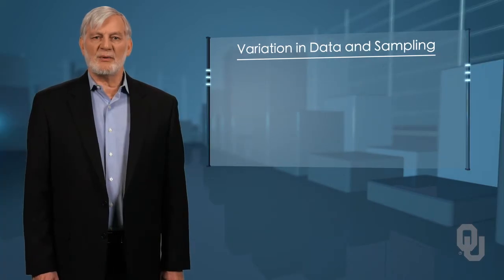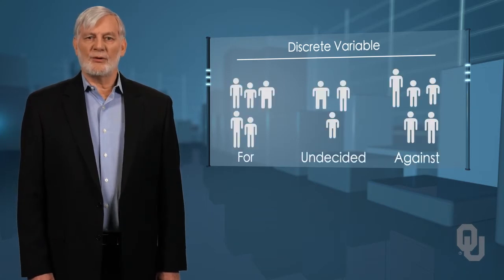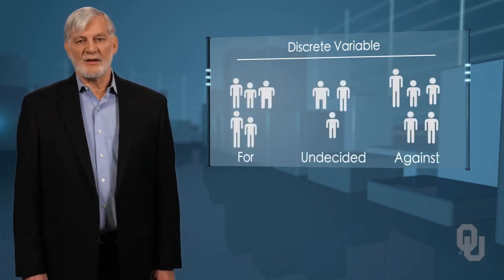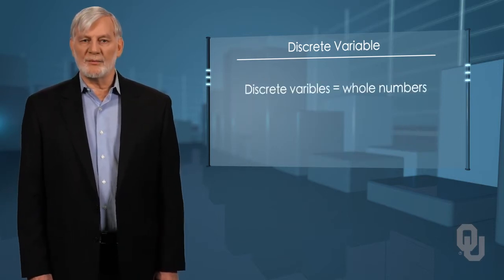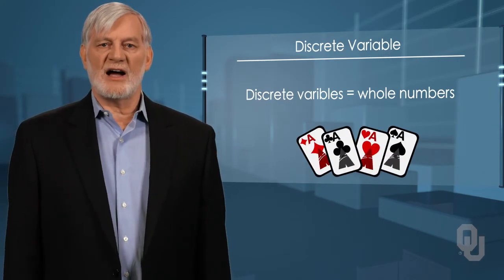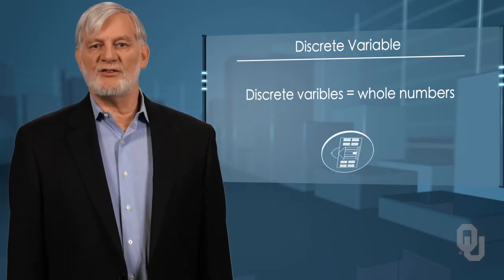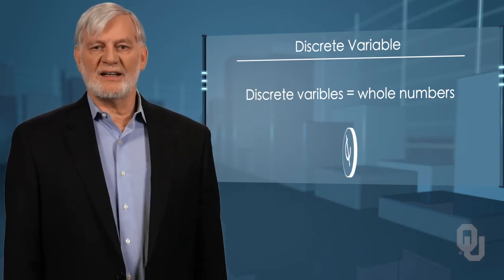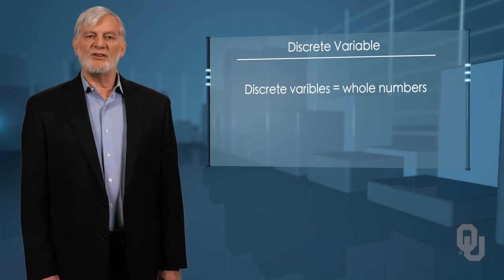The example of sampling people to get their opinion on a tax increase is a discrete variable. Here you are either for, against, or undecided. Discrete variables are ones that cannot take on a value other than a whole number. Examples would be the number of aces in a five-card hand drawn from a deck of cards, or the number of heads you get when you toss a coin ten times — there is no such thing as half a head or half an ace. Qualitative data is always discrete.